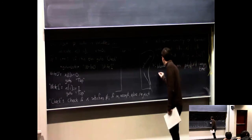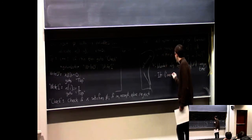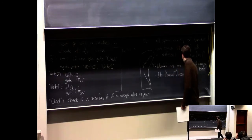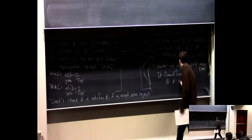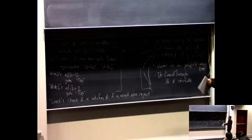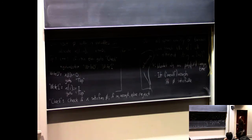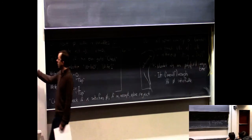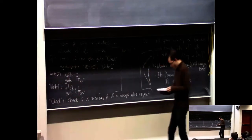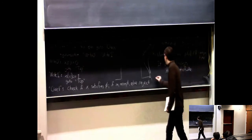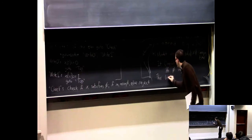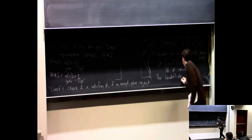This is a polynomial time algorithm. And it overall accepts if and only if phi is satisfiable. In fact, the number of accepting branches out of 2^n will be exactly the number of satisfying assignments. So in particular, you overall accept if and only if at least one branch is accepting. We can therefore say this non-deterministic algorithm decides SAT.